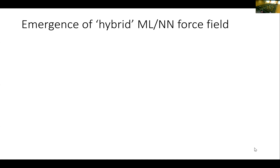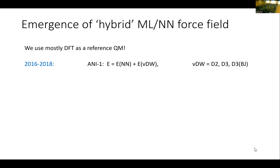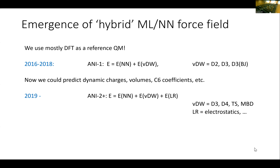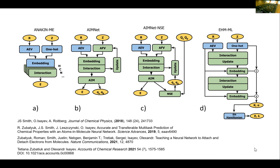For the past few years we've been developing families of different methods, starting from ANI, which has short-range description using a neural network. You can add dispersion — typically Grimme-type D2/D3 dispersion. In addition to predicting energy, we can predict other quantities like charges and C6 coefficients. We have another architecture called AIMNet where everything is implicit inside the neural network, which also describes long-range interactions.